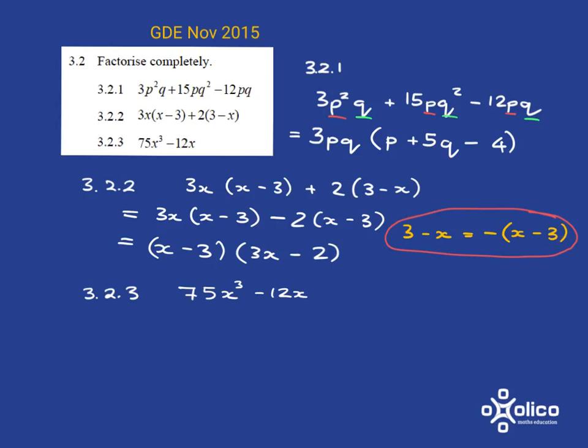Here I can see the common factors, and I always look for common factors first. So what can divide into 75 and also into 12? Well, it's definitely 3 that can divide into both of those, so I can take out a 3. And then if I focus my attention on the x's, well, here I've got x cubed, here I've got an x, so in total I can take out a common factor of x.